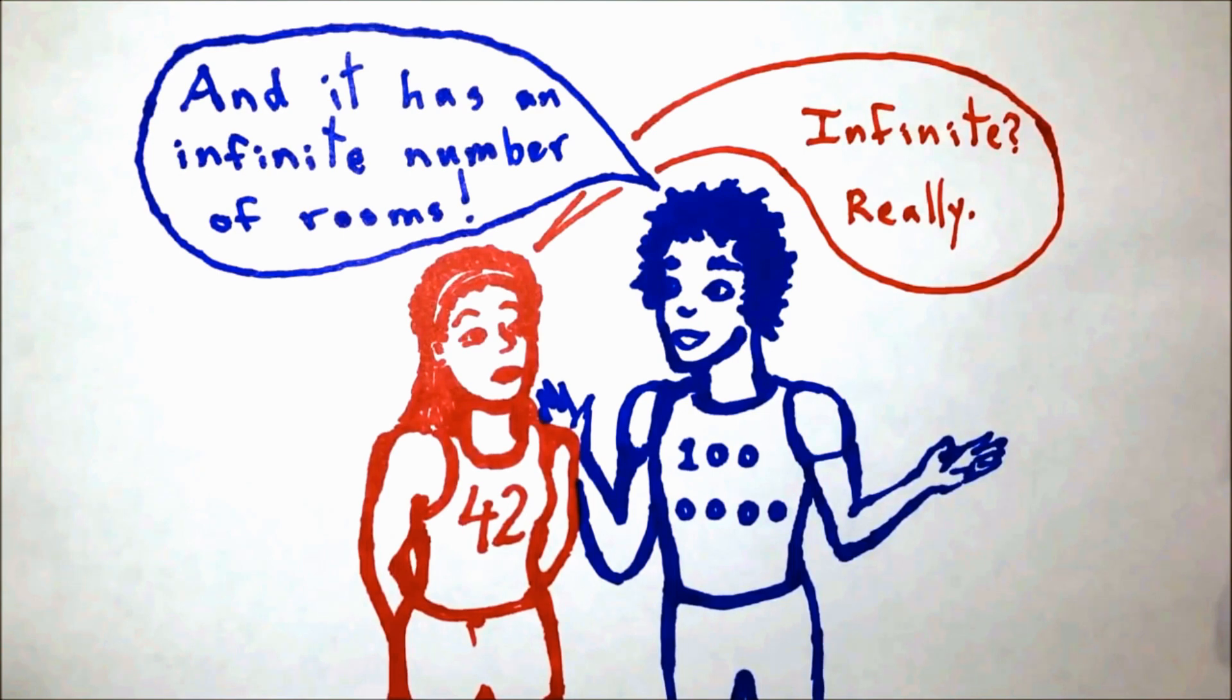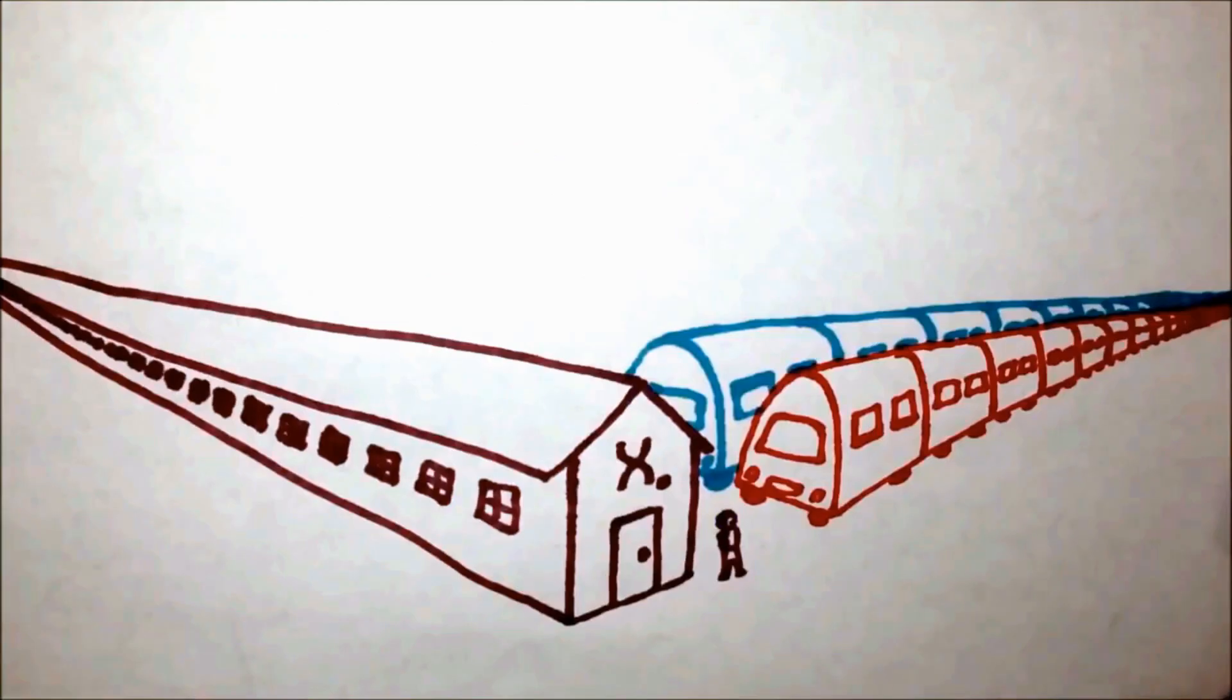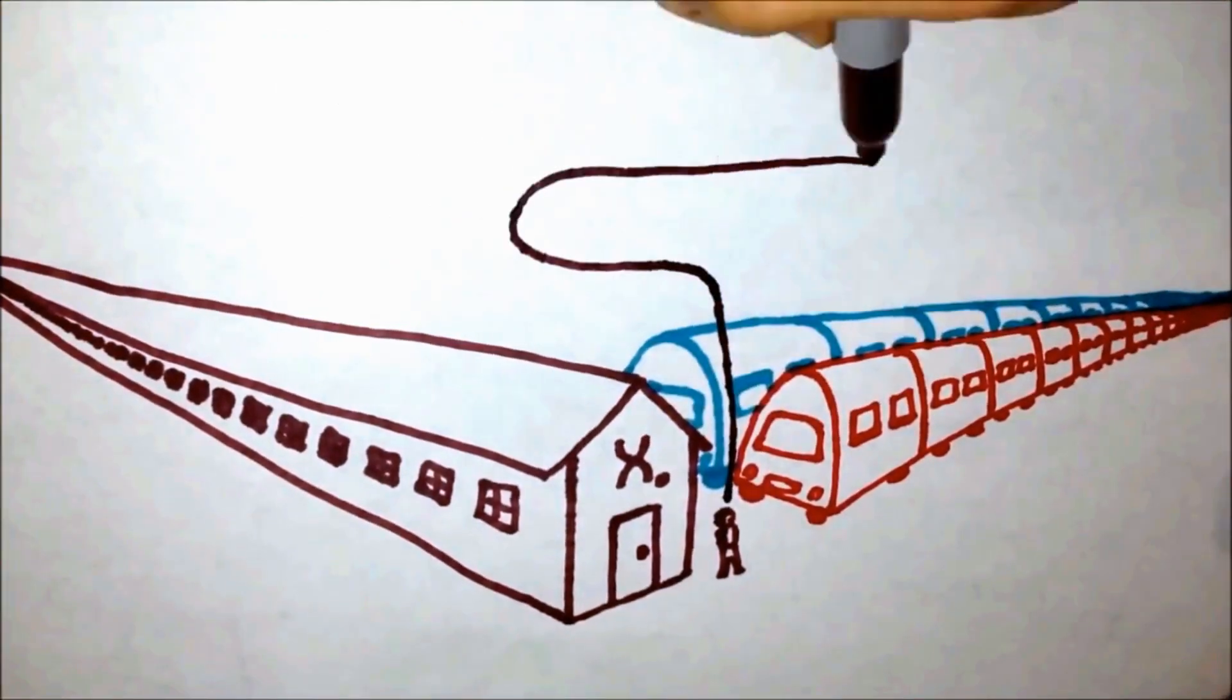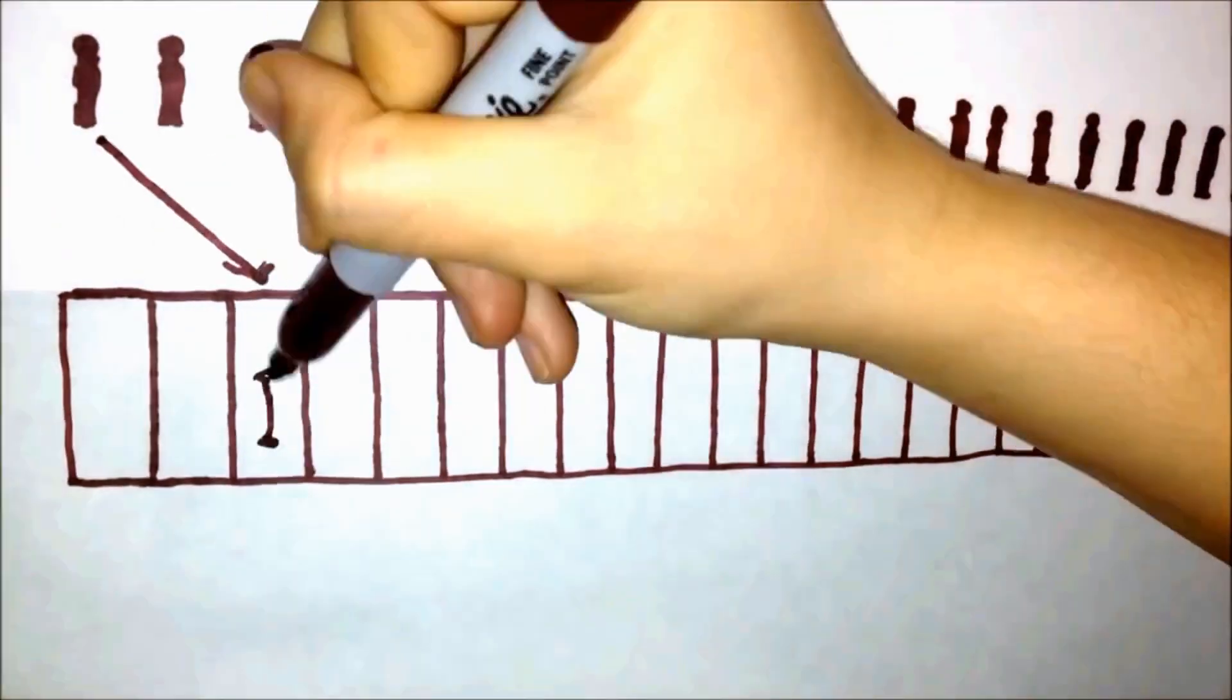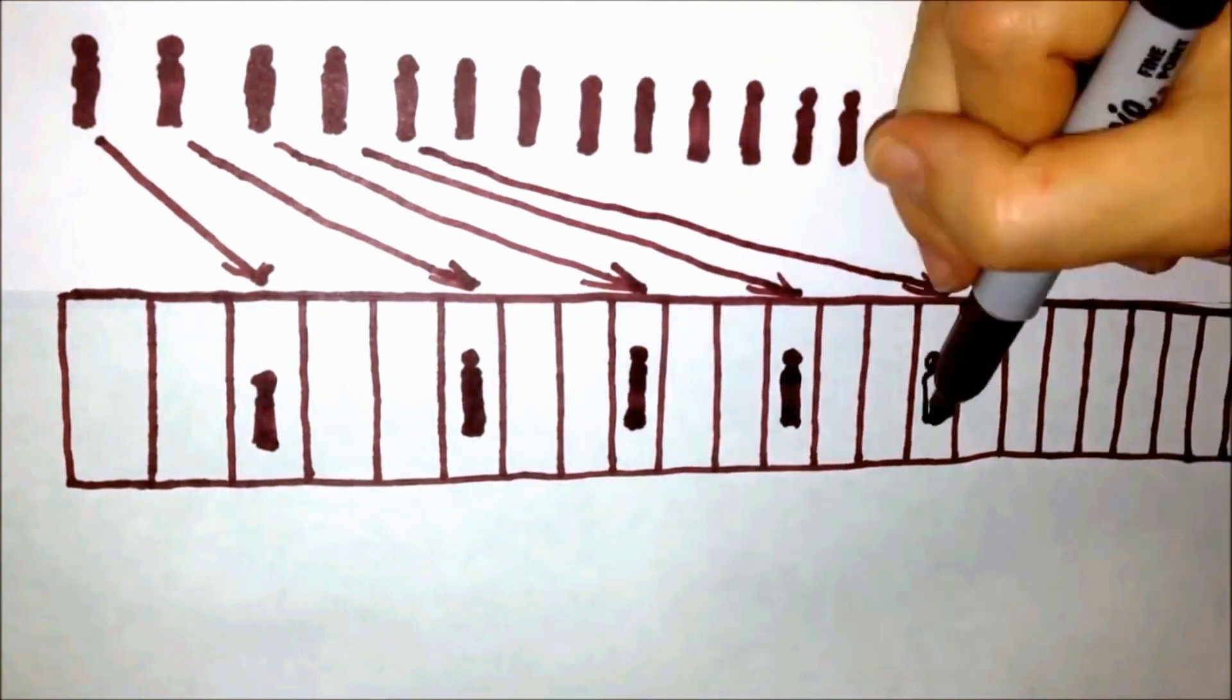Some nights two infinite teams even show up at once, but it's not a problem. In that situation, you just ask your current guests to multiply their room numbers by three instead of two.